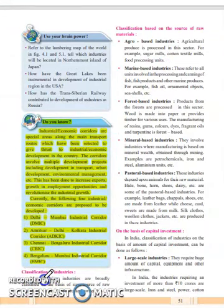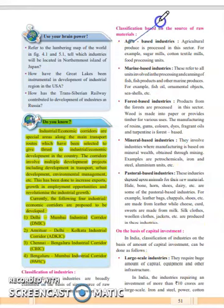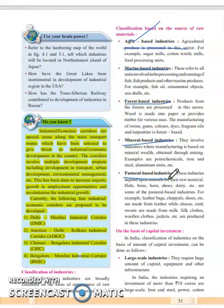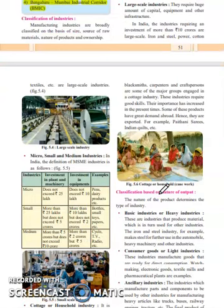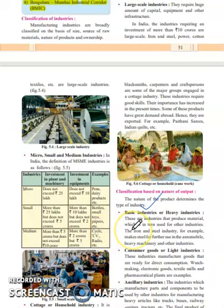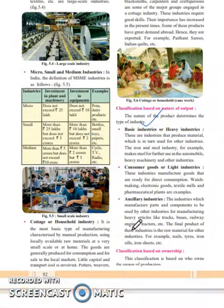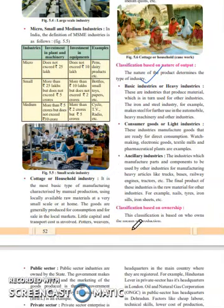Now we move further with the classifications of industries, which is a very important section explained on different concepts. Classification on the basis of raw material includes agro-based, marine-based, forest-based, mineral-based, and pastoral-based industries. Classification on the basis of capital investment includes large scale, small scale, micro scale, and medium scale — MCQs can come on this. Classification on the basis of nature of output includes basic industries or heavy industries, consumer goods, light industries, and ancillary industries.